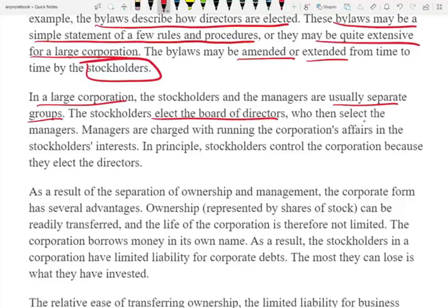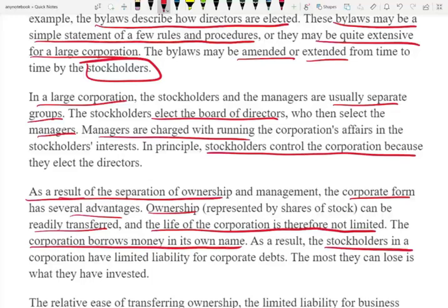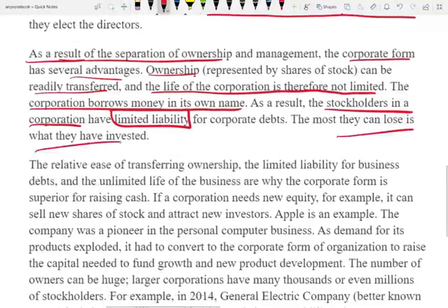In principle, stockholders control the corporation — they vote for the board of directors. As a result of the separation of ownership, ownership can be readily transferred and the life of the corporation is therefore not limited. Think of Steve Jobs: when the founder of Apple passed away, Apple did not close — they kept on going. The corporation borrows money in its own name, so stockholders have limited liability and are not responsible for corporate debt. The most they can lose is the money they invested.